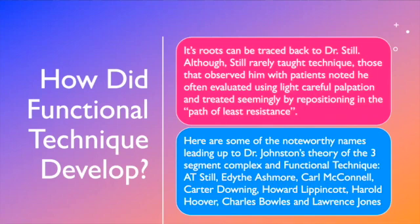So this is, there are references in Dr. Still's writings of soft techniques, whether it was actually functional technique or functional technique developed from these ideas, difficult to tell. Some names that Dr. Johnston gives credit to for coming up with functional technique would be from Dr. Still, Edith Ashmore, Carl McConnell, Carter Downing, Howard Lippincott, Dr. Hoover, Dr. Bowles, and Lawrence Jones. And these people were not working necessarily the same, but they're all leading to what Dr. Johnson developed as functional technique.